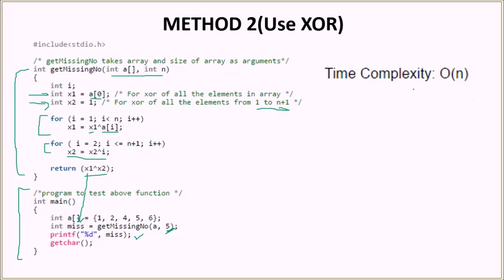Again, the time complexity of this solution is order of n. Because even though we are running two loops, they are running one after the another. So the time complexity is order of n.